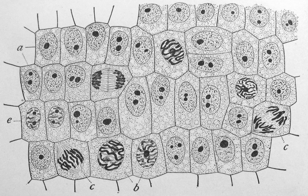Cells consist of cytoplasm enclosed within a membrane, which contains many biomolecules such as proteins and nucleic acids. Organisms can be classified as unicellular, consisting of a single cell including bacteria, or multicellular, including plants and animals. The number of cells in plants and animals varies from species to species; it has been estimated that humans contain somewhere around 40 trillion (4 × 10¹³) cells.